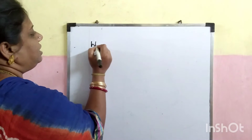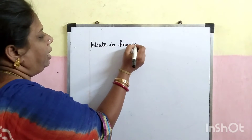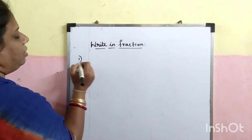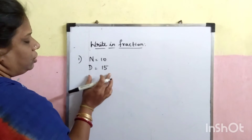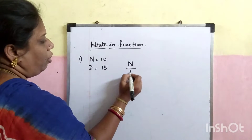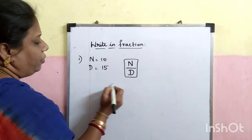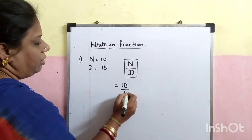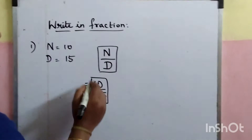Last class, we studied about writing fractions — numerator and denominator. For example, if numerator equals 10 and denominator equals 15, we have to write this in the form of a fraction. We know numerator goes at the top and denominator at the bottom — N by D is the standard form. So here, N is 10 and denominator is 15. Therefore, 10 by 15 is the fraction.